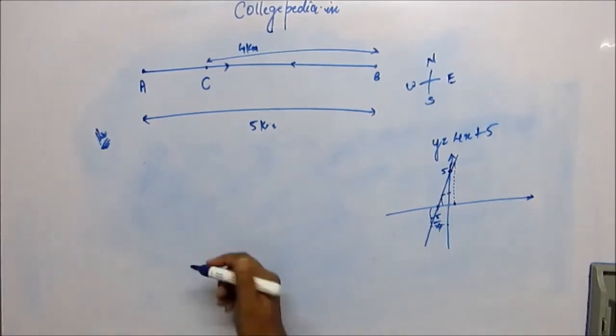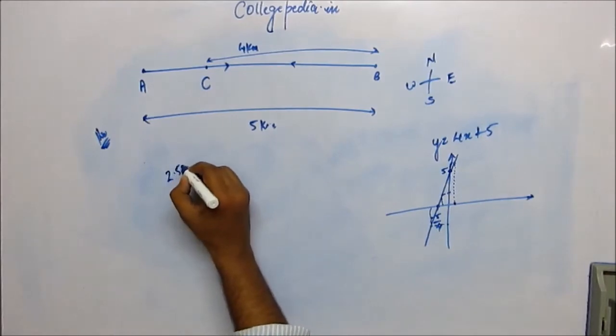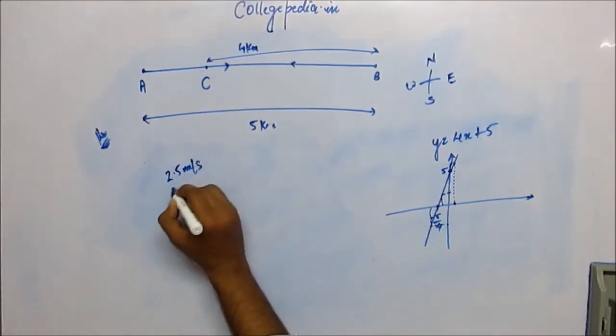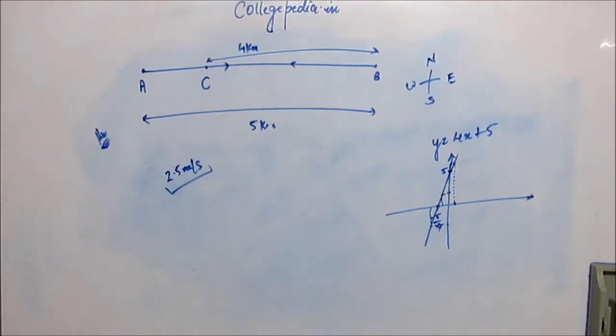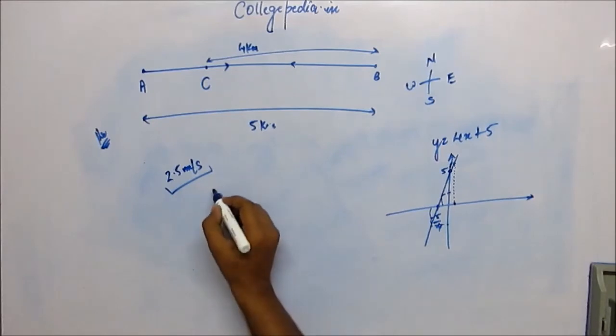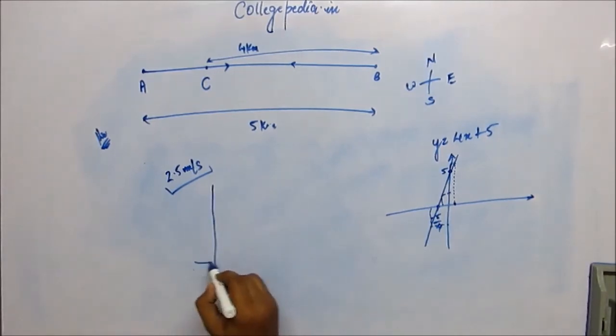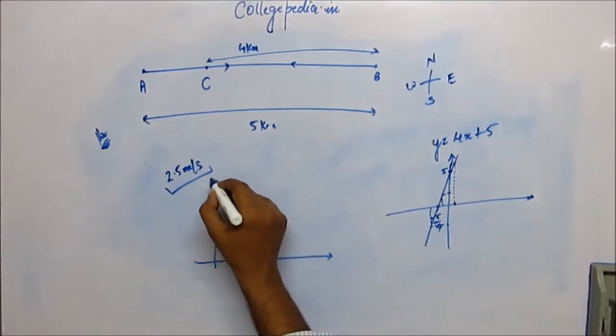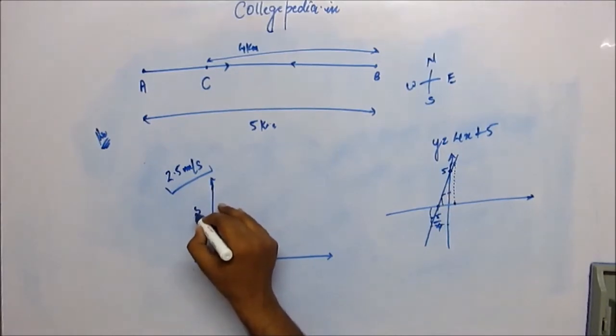Now in the previous case, when we reported speed to be 2.5 meter per second, this was supposedly average speed. Now if for the sake of learning, let me assume that the person was actually moving at 2.5 meter per second at every moment of his journey.